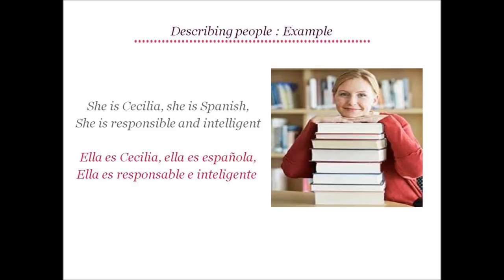Now let's use some of these to describe people. Look at the image on the right and let's try to describe her. She is Cecilia; she is Spanish becomes ella es Cecilia, ella es española — note that we use española as Cecilia is female. She is responsible and intelligent becomes ella es responsable e inteligente. Note that whenever a word after Y starts with an E sound, we translate it as e and not y, as you don't want two E sounds in a row.